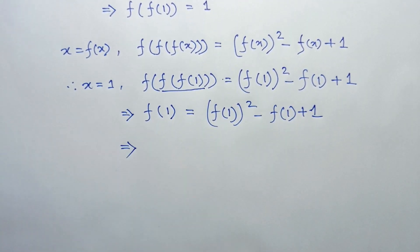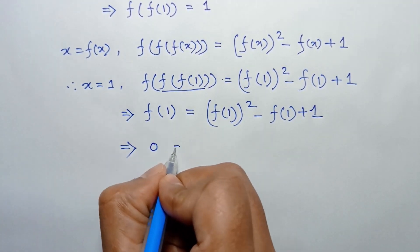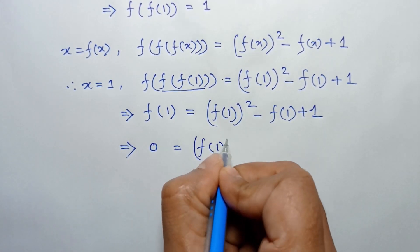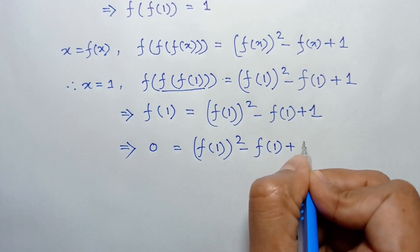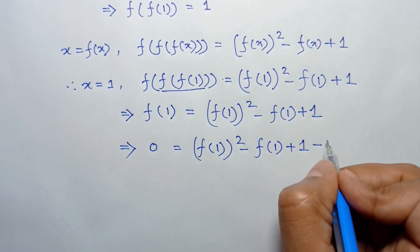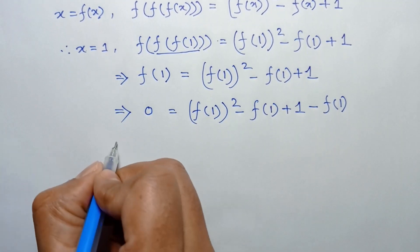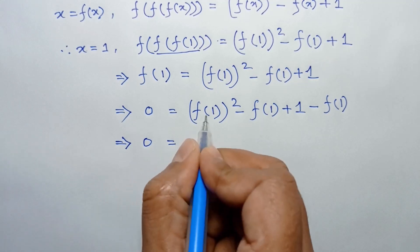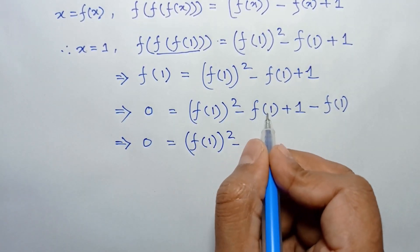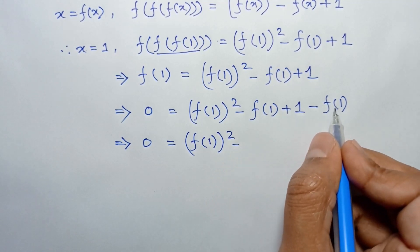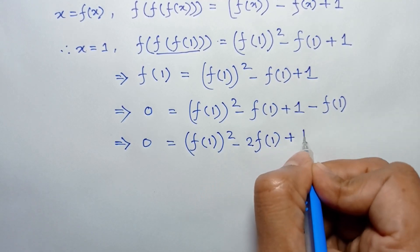Taking f(1) to the right side, we will have 0 equal to f(1) squared minus f(1) plus one minus f(1), which simplifies to 0 equal to f(1) squared minus two times f(1) plus one.